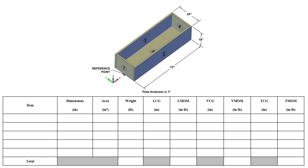Now that we understand the center of gravity concept, we're going to find out how to calculate the center of gravity using this simple example. In this example, I have a barge that's made of five steel plates, and each of the plates have a plate thickness of one inch. My barge's dimensions are 72 inches length overall, an 18 inch depth, and a 24 inch beam.